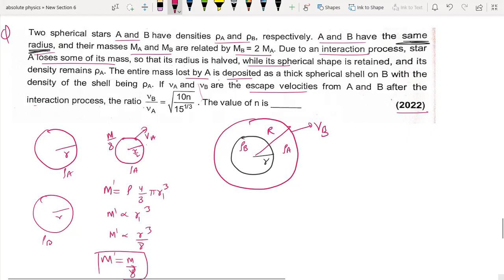So how much mass is lost? M was the first mass. A has mass m/8 remaining, so 7m/8 was lost. B's mass was already 2m, plus 7m/8, so it becomes 23m/8.